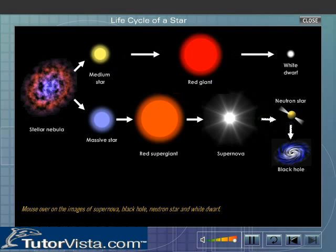Once the star reaches the red giant phase, then its future depends on its initial mass. There are two possible alternatives, namely White Dwarf and Supernova Explosion.